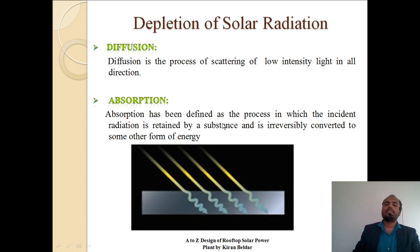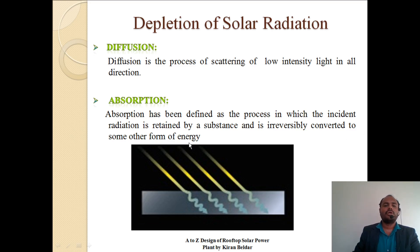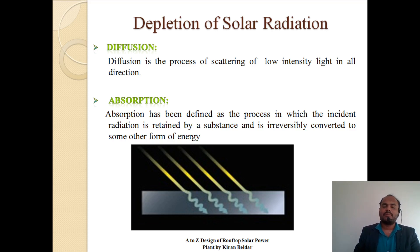Absorption is defined as a process in which the incident radiation is retained by a substance and is irreversibly converted to some other form of energy. When solar energy falls over a black body, the black body absorbs the whole amount of solar energy. Over any surface where sun radiation is falling, that radiation is absorbed by the object – this is called absorption.